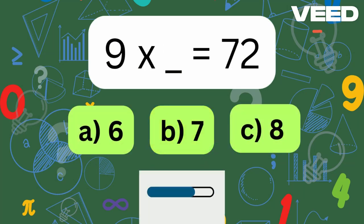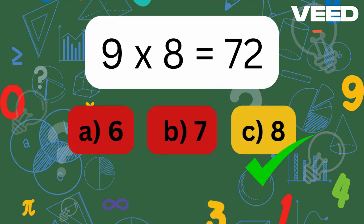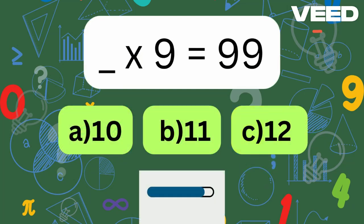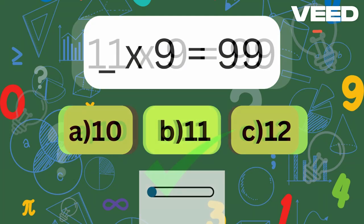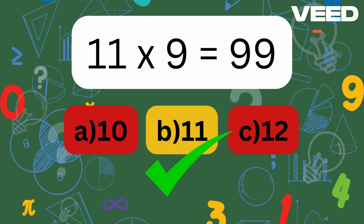9 times what equals 72? 9 times 8 is equal to 72. What times 9 is equal to 99? 11 times 9 is 99.